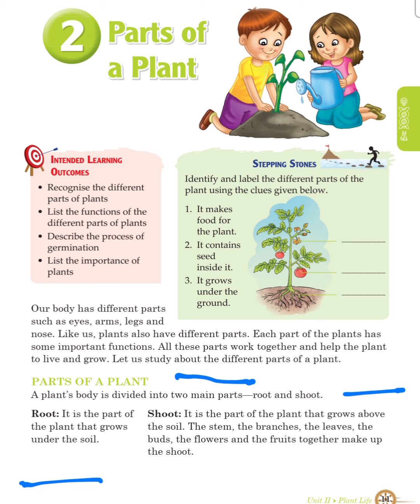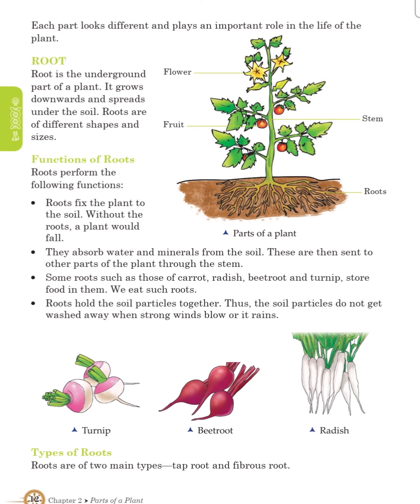The stem, the branches, the leaves, the buds and the flowers and the fruits together make up the shoot. Each part looks different and plays an important role in the life of the plant.